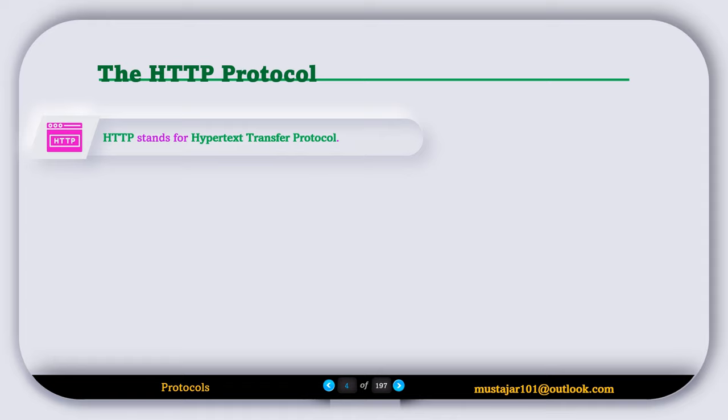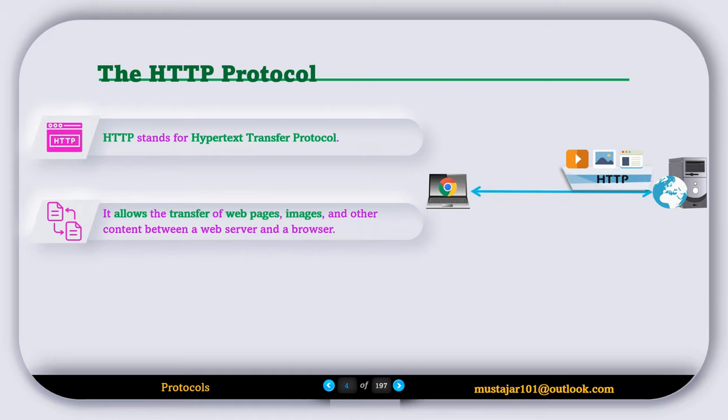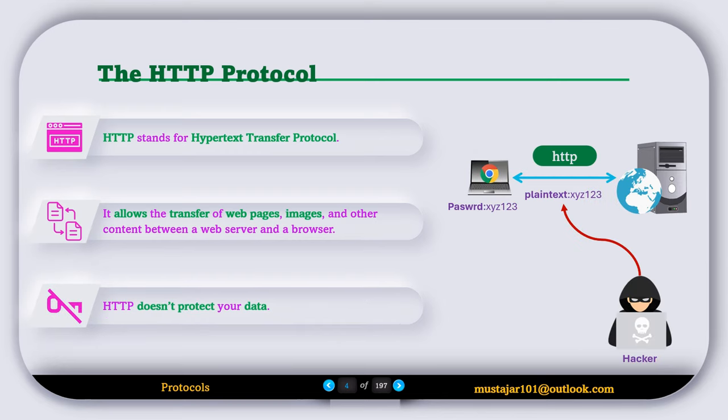Now let's discuss the first type of protocol, which is HTTP. HTTP stands for Hypertext Transfer Protocol. It allows the transfer of web pages, images, and other content between a web server and a browser. However, HTTP does not protect your data, meaning a hacker can see what you sent, like passwords or personal information.